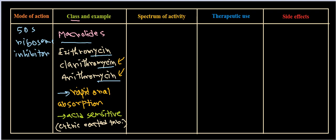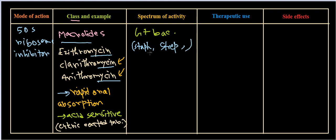Macrolides are majorly active against gram positive bacteria. Examples of gram positive bacteria they target include Staphylococcus and Streptococcus. Sometimes they can also be active against Legionella and Mycoplasma infections.